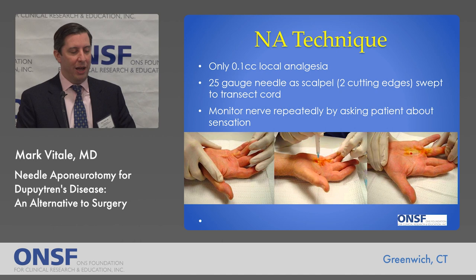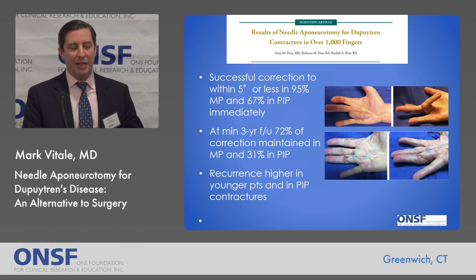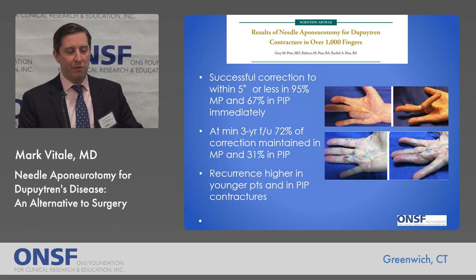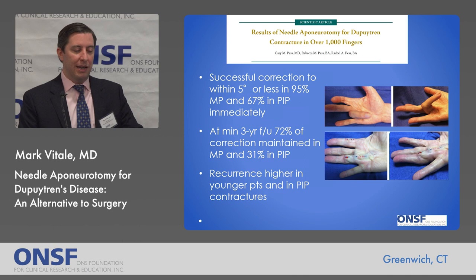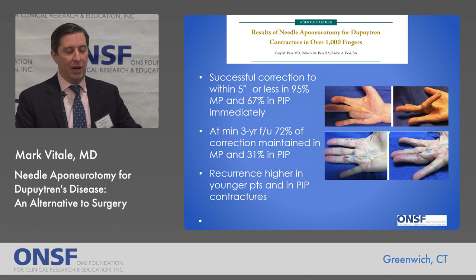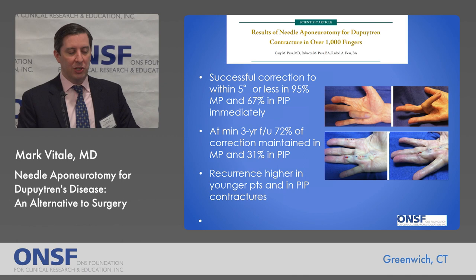Another prolific person in this treatment, Dr. Gary Pesté, who's one of the few people who's published on this technique, published a series of 1,000 fingers and found that successful correction to within a 5-degree contracture or less was obtained in 95% of patients with MP joint contractures and 67% of patients with PIP joint contractures. At a minimum three-year follow-up, 72% of patients kept their correction at the MP joint, but only 31% at the PIP. Recurrence was higher in patients with PIP contractures and in younger patients.